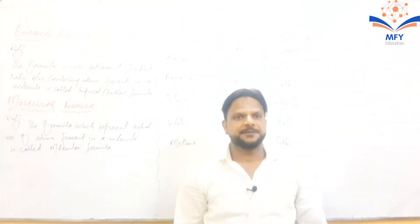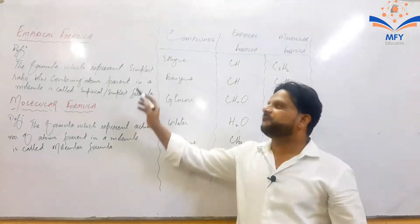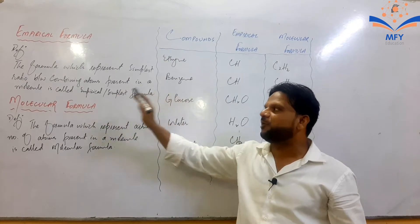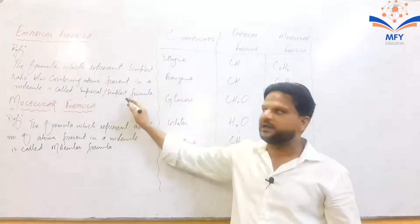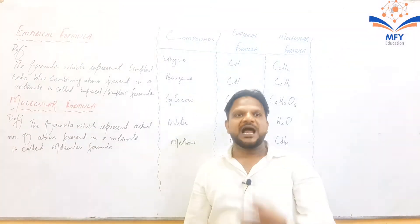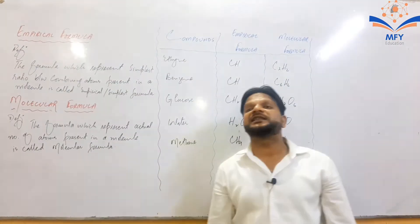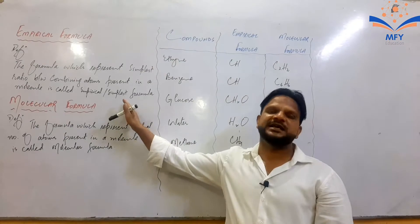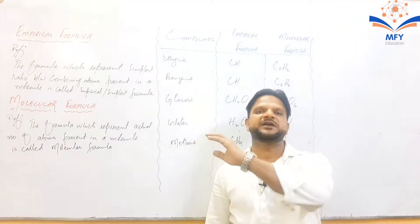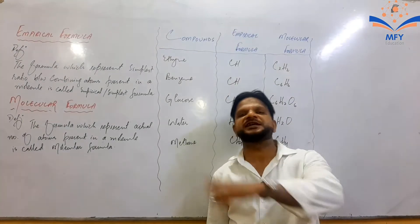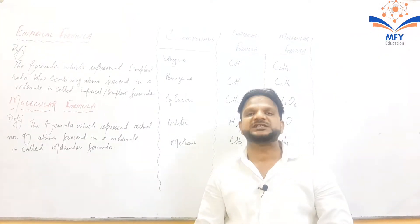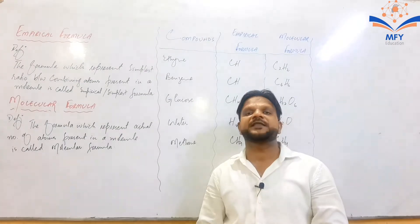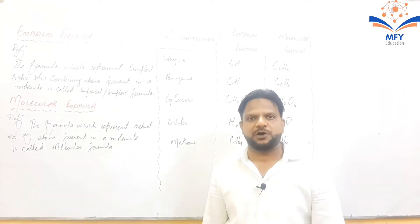The topic of empirical and molecular formula. The formula which represents the simplest ratio of combining atoms present in a molecule is called empirical or simplest formula. ایسا formula جو کہ کسی بھی molecule میں موجود atoms کے درمیان simplest ratio کو ظاہر کرے یہ کہلاتا ہے empirical or simplest formula. Second — molecular formula: the formula which represents actual number of atoms present in a molecule is called molecular formula.